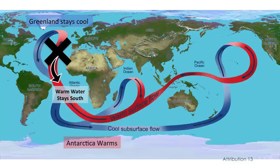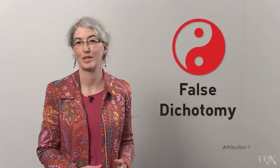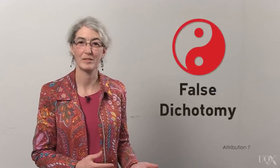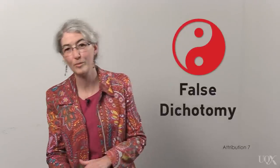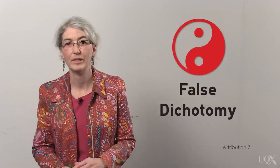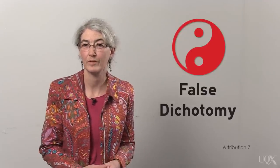Let's return to the myth that CO2 cannot cause warming, because some warming was observed before the major increase in CO2. This myth is an example of a false dichotomy or false dilemma. The myth can be rephrased as two options. Either increased CO2 caused warming, or warming caused increased CO2. A false dilemma makes you believe that there are only two possible options and that one negates the other.